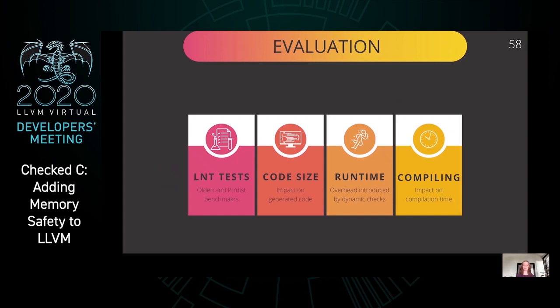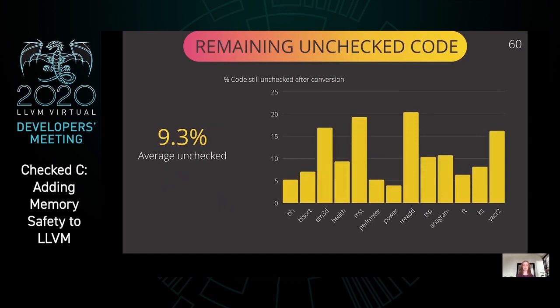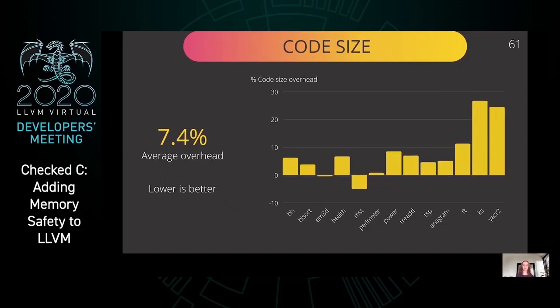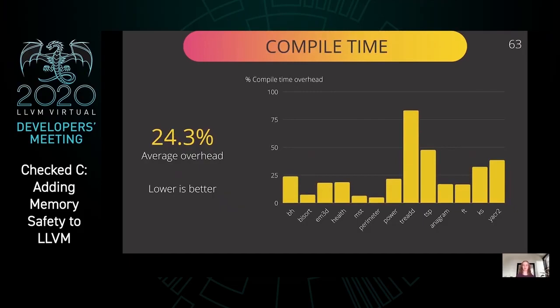On selected benchmarks from the LLVM LNT tests, we focus on the difference in code size, runtime, and compile time for converted versus unconverted code. On average, 17.5% of the lines of code in these benchmarks were modified as part of converting them to Checked C, and 9.3% of the code in the converted benchmarks remained unchecked. The code size of the converted benchmarks was on average 7.4% larger. The runtime was on average 8.6% longer. The compile time was on average 24.3% longer than that of the unconverted benchmarks.